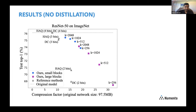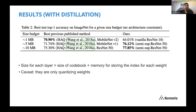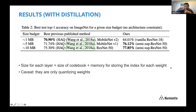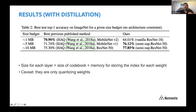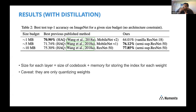One result is without knowledge distillation, and another shows with knowledge distillation. With knowledge distillation, for ResNet 50 they can maintain about 76 to 77.8 percent accuracy with pretty decent compression. The semi-supervised network mentioned is the one they used as the knowledge distillation teacher network — likely one of the Facebook ones.